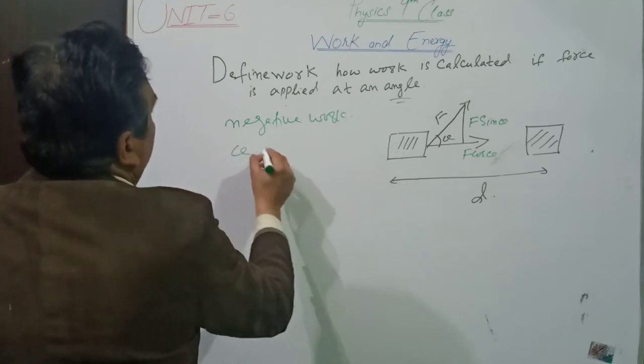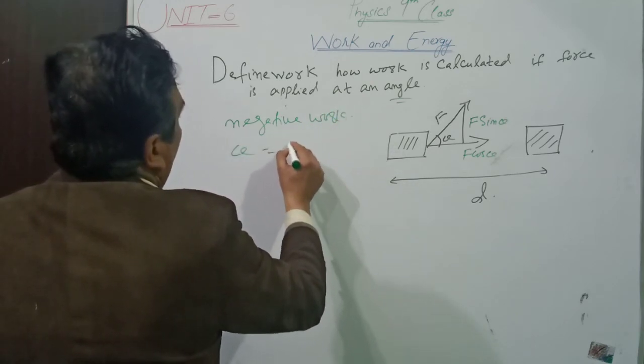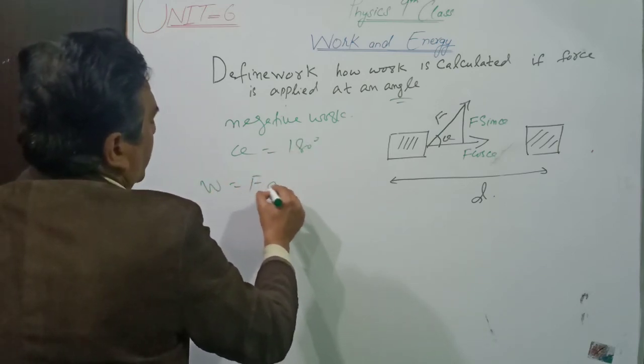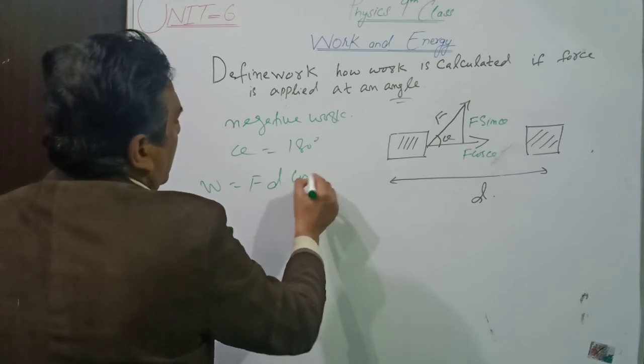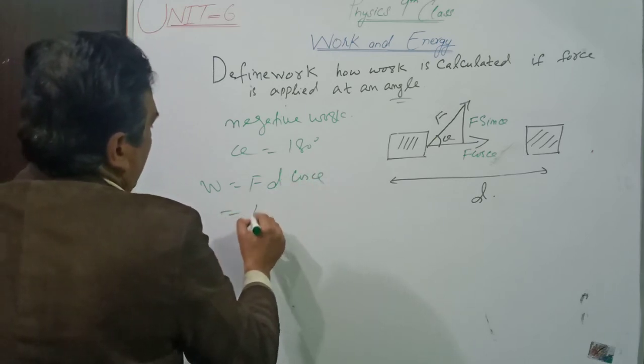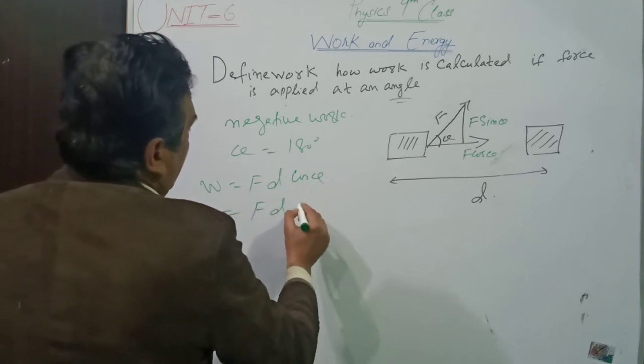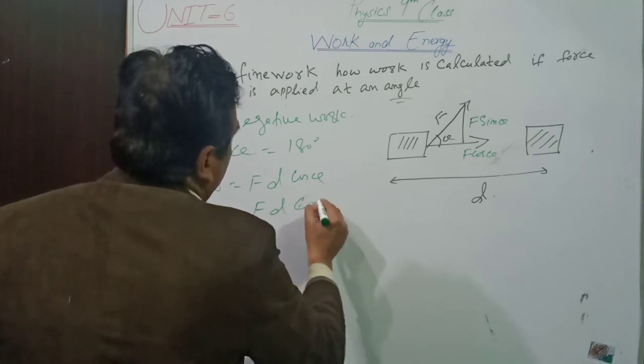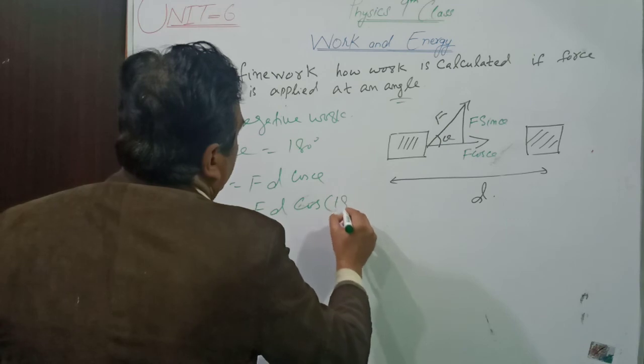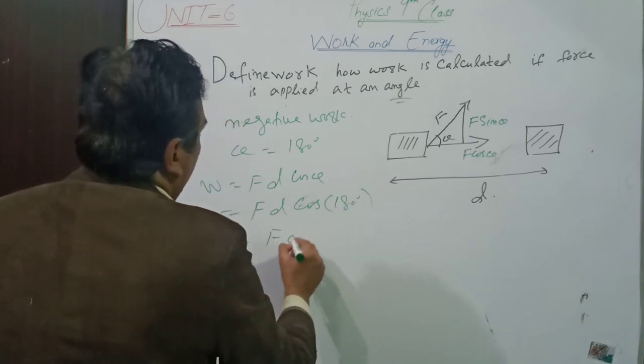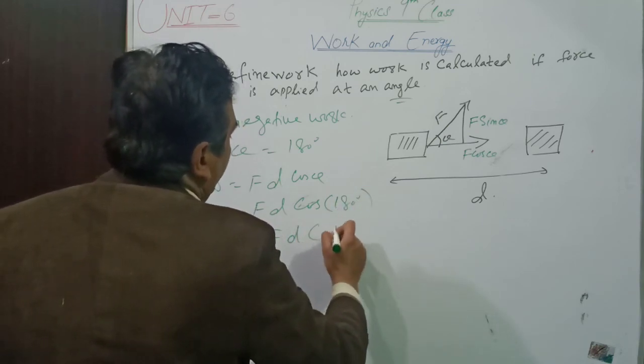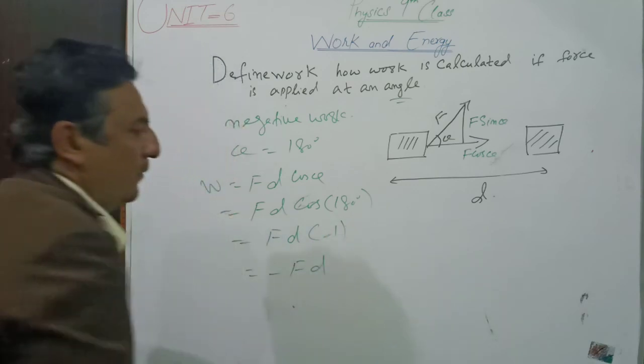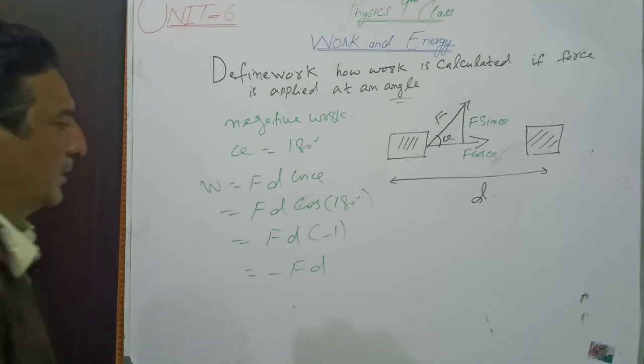When theta equals 180 degrees, W equals F d cos theta, F d cos 180 degrees. F d cos 180 is minus 1, so minus F d. This is negative work.